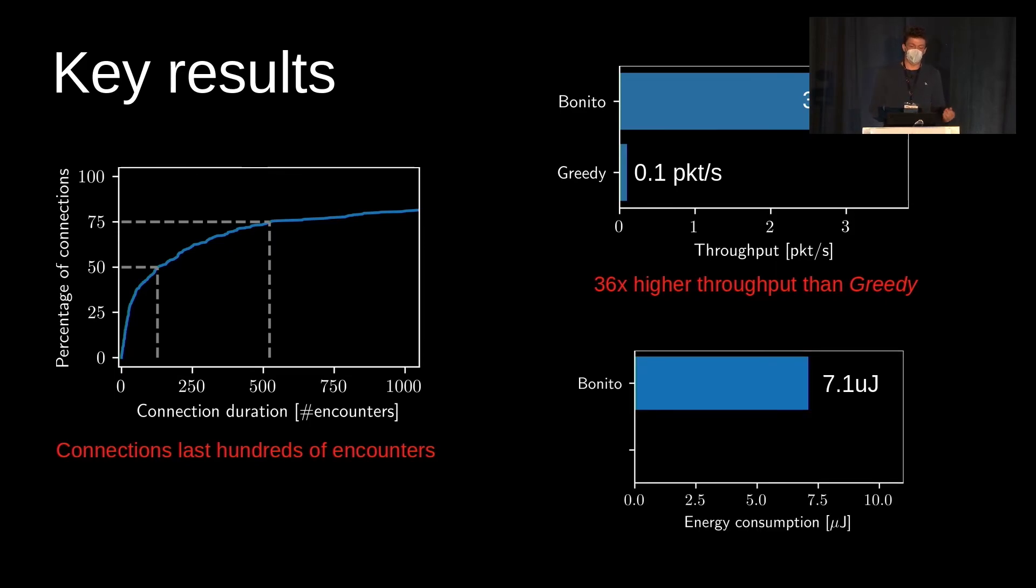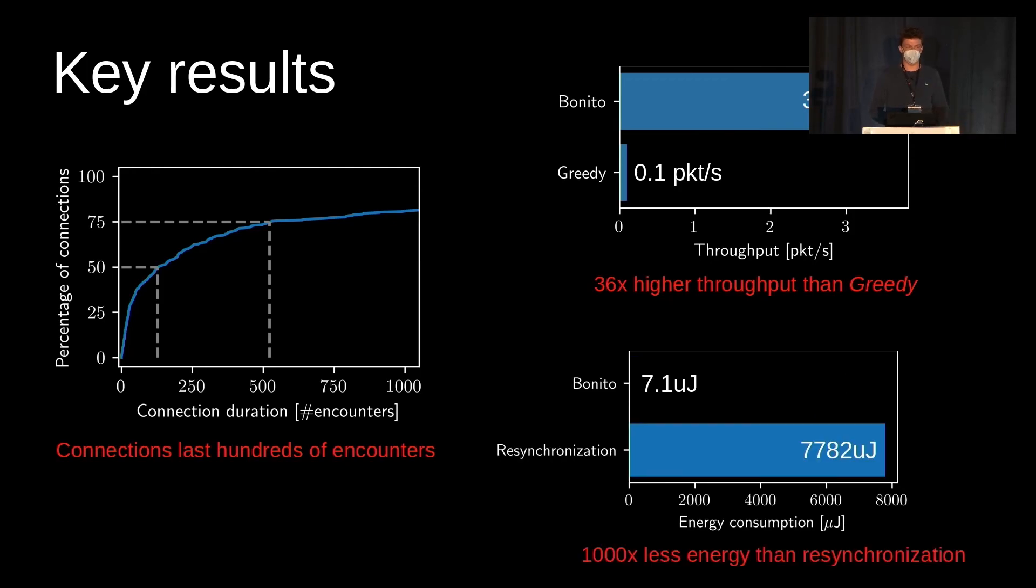Finally, the online learning of the charging time distribution and the inversion of the joint CDF consumes significant energy. This makes up to 25% of the energy budget that we have per individual wake-up. But if we compare it to the energy required for resynchronization, we see that this is still only one thousandth of the energy required for that. So it definitely makes sense to run Bonito compared with the cost to resynchronize for every single encounter.